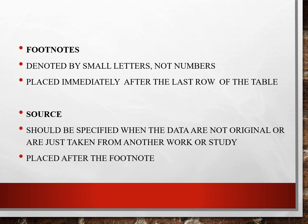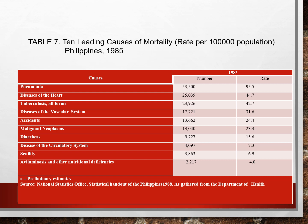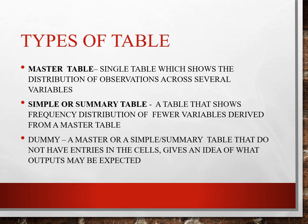Going back to our previous example — this is the tabular form: 10 leading causes of mortality per 100,000. Types of table include the master table — a single table showing the distribution of observations across several variables. Simple or summary table — a table that shows frequency distribution of fewer variables derived from a master table. And dummy — a master or simple summary table that does not have entries in the cells, giving an idea of what outputs may be expected.